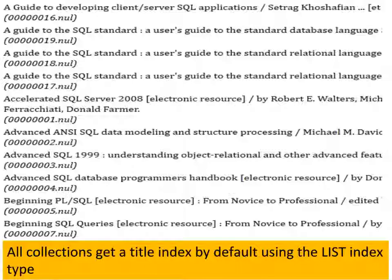You'll want to keep the default title indexes. All collections usually have an index by title, which is really a list of all the records in the collection. The default index type for that is the list index type, which is a straight alphabetical list of the titles — a very straight A-Z list of every record in your collection.